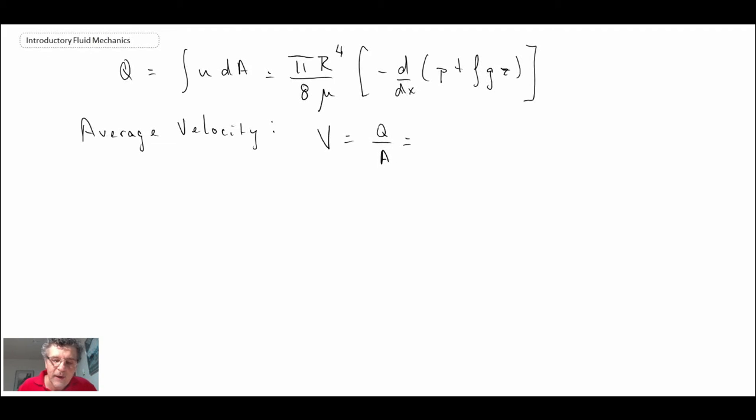By comparing Q and U max, we find that the average velocity for this flow is just one-half U max. And this is for laminar flow, which enabled us to make that original substitution for tau is mu du dr.